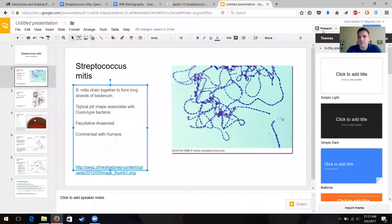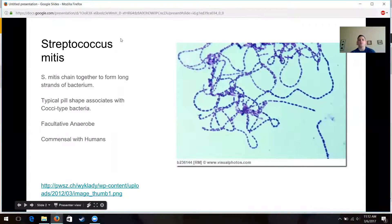All right, so we got a few pictures to share with everybody. Let's see if we can make this work. So this is what Streptococcus mitus looks like. It's formed together into long chains, long strands, just like we've seen in the lab class for several different types of bacteria.